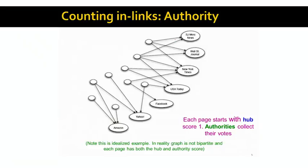In terms of graph structure, we have authorities pointed to by good hubs. Hubs are, in some sense, indices that point to good content. As with PageRank, we think of links as votes, but now every web page has two scores: an authority score and a hub score. The authority score is the sum of hub scores of everyone that points to it, and the quality of a hub is the sum of the qualities of the authorities that the hub points to.